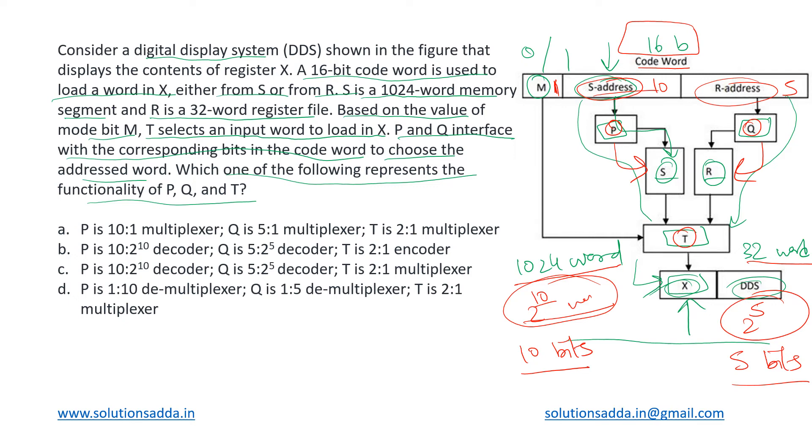So for 2 to the power 10 words, what will be the size of the decoder we will need? It will be a 10 cross 2 to the power 10 decoder. So device P will be a 10 into 2 to the power 10 decoder.